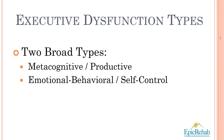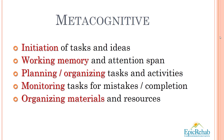We can think of executive dysfunction broadly as occurring in the metacognitive and productive arena, and in the arena of emotional and behavioral self-control. There are five metacognitive types of executive dysfunction: initiation of tasks and ideas; working memory and attention span; planning and organizing tasks and activities; monitoring tasks for mistakes and completion; and organizing materials and resources to implement tasks, ideas, and activities.